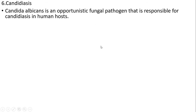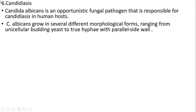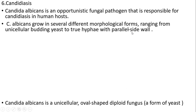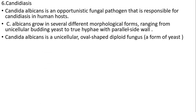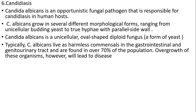Candidiasis — Candida albicans: Candida albicans is an opportunistic fungal pathogen responsible for candidiasis in humans. It grows in several different morphological forms ranging from unicellular yeast to true hyphae with parallel sidewalls. Candida albicans is a unicellular, oval-shaped diploid fungus. Typically, Candida albicans lives harmlessly in the GI and genital tracts and is found in over 70% of the population. Overgrowth of these organisms, however, will lead to disease.